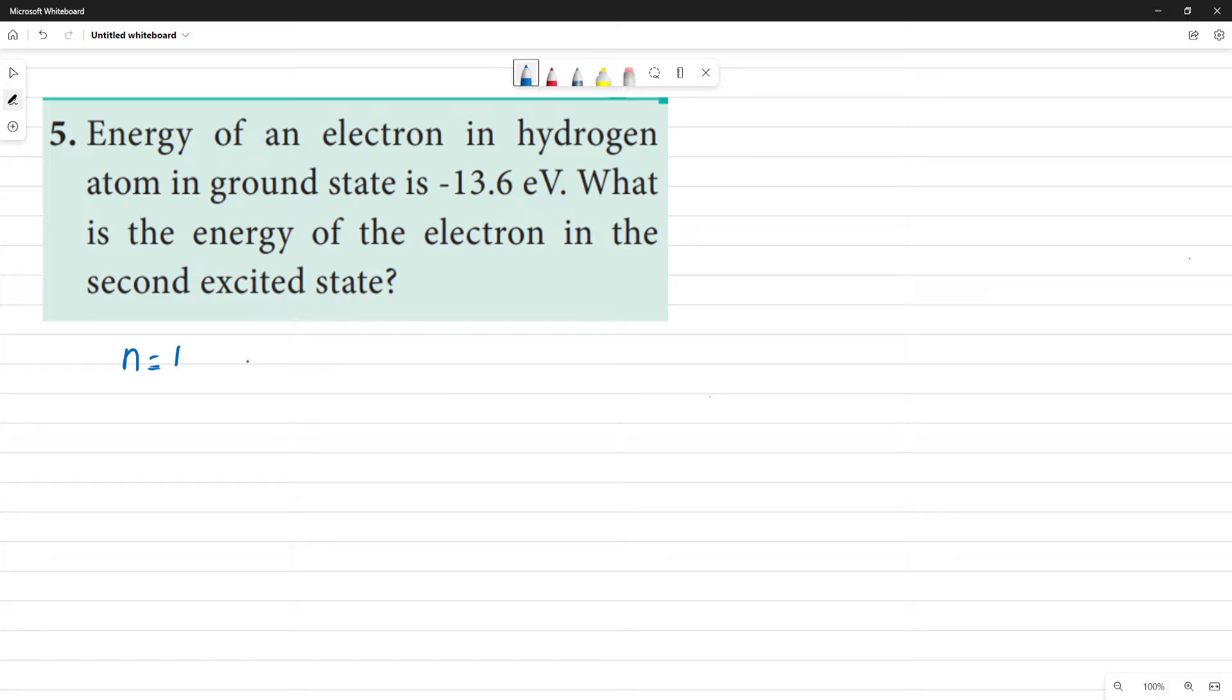Okay, there is no n is equal to 0. N is equal to 1, energy of the electron E is equal to minus 13.6 electron volt. So this is n is equal to 1.